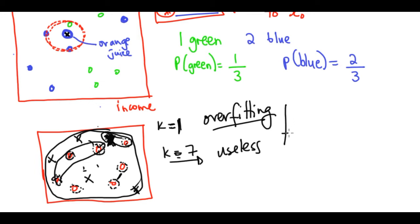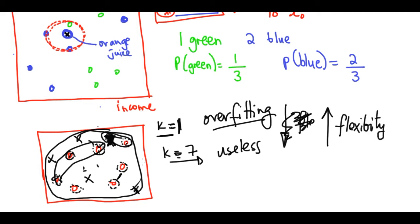Reducing k increases flexibility - fewer neighbors means the decision boundary tightens around individual points, leading to overfitting. Increasing k decreases flexibility, making the classifier behave more like a straight linear model - useless at the other extreme. So flexibility increases as k decreases.